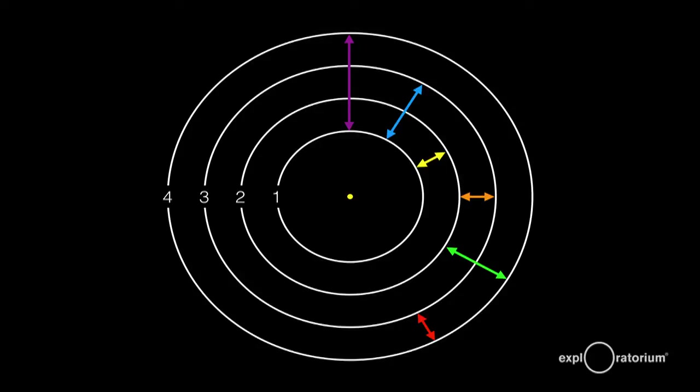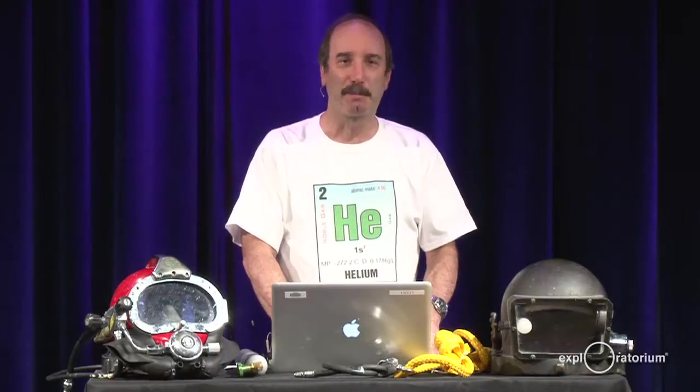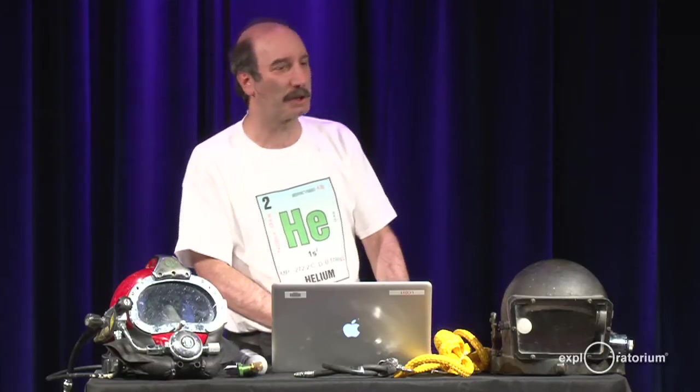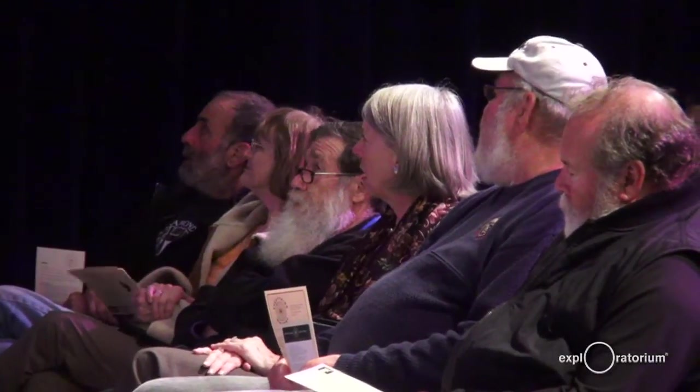Helium, if you put it into a discharge tube and light it up, gives off a set of colors that look something like this. On the left-hand side you see the helium tube — that's the color it looks like to the naked eye, kind of white — and if you use a diffraction grating or a prism, it breaks that up into a series of colors: a violet, a couple of blues, a turquoise, a yellow, and a red.